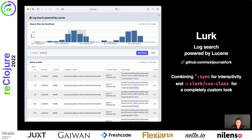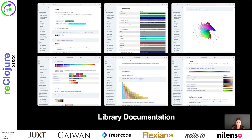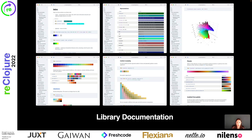Looking at this, you wouldn't believe this all lives inside a Clerk notebook. Another use case is providing library docs. What you see here are the docs for Clojure 2D's color slip. It implements a set of custom Clerk viewers to visualize colors and gradients — another good example of moldable programming. Once they have the nice color previews, they can combine them with Clerk's built-in table viewer, giving them tables full of colors and gradients.